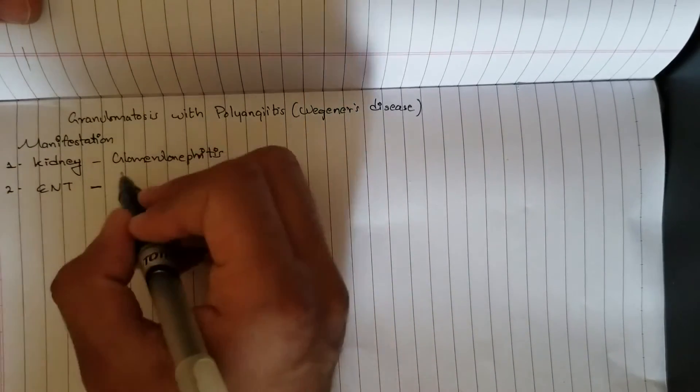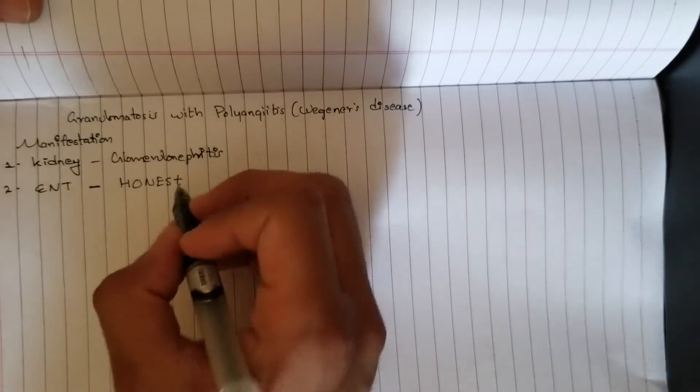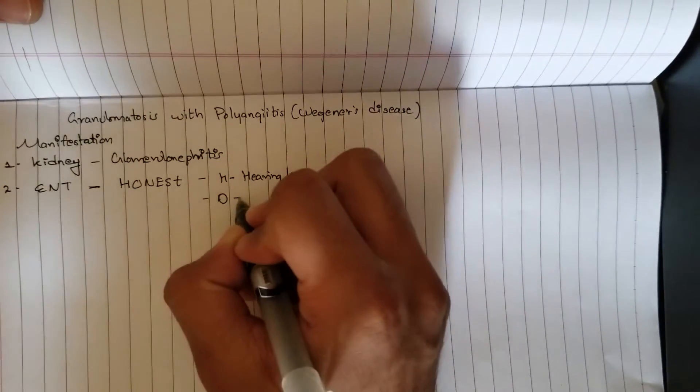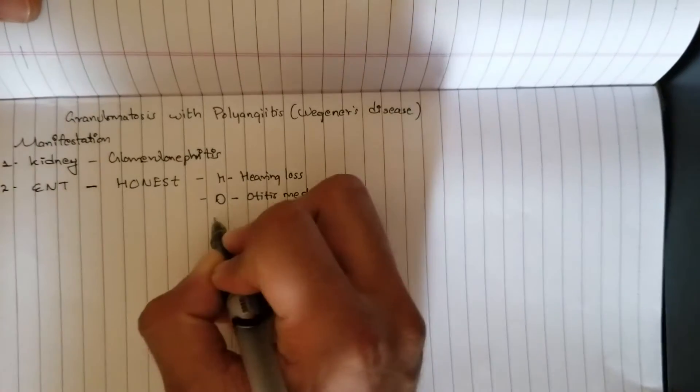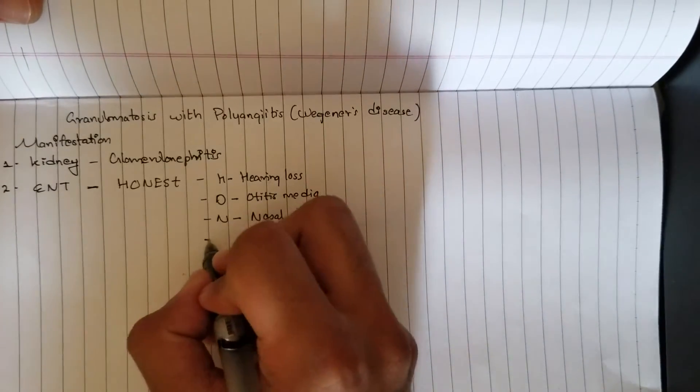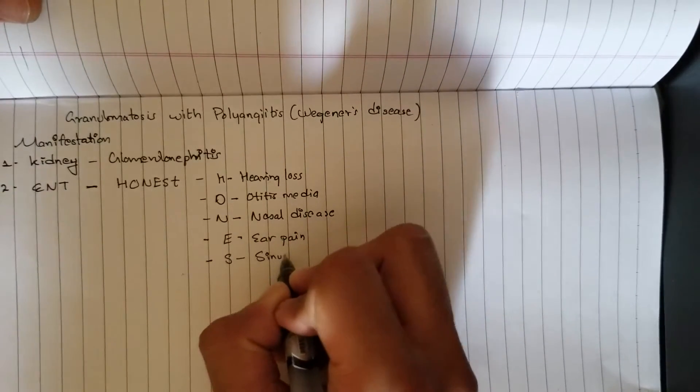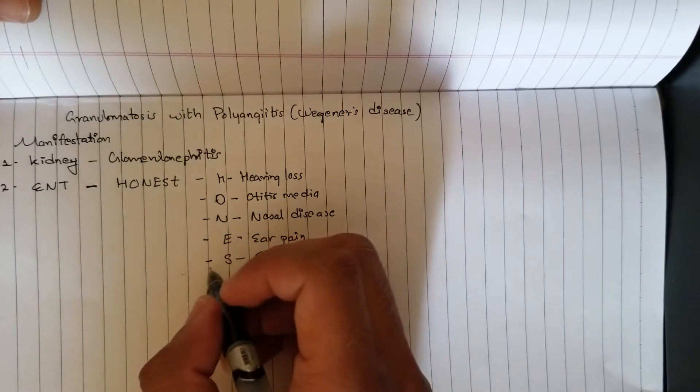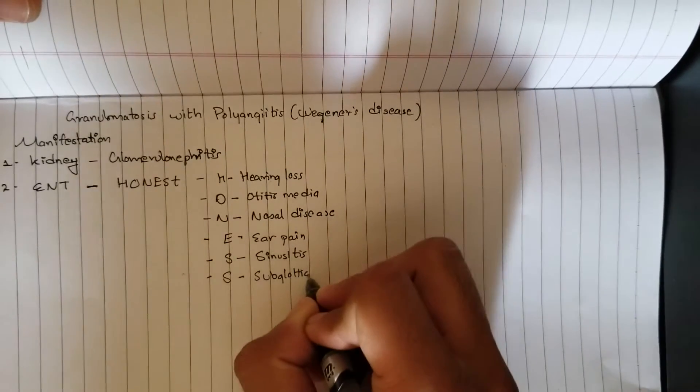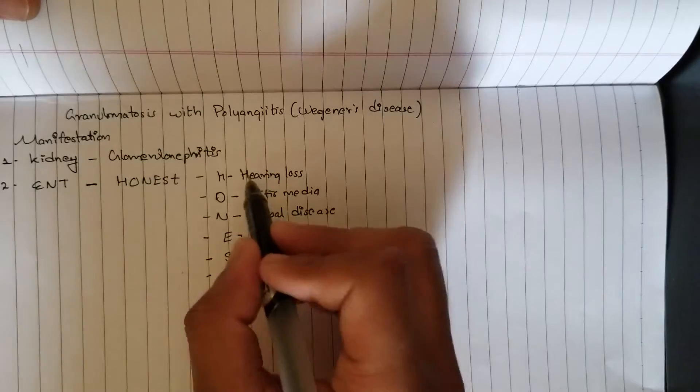So here the mnemonic is HONEST. H for hearing loss, O for otitis media, N for nasal disease.